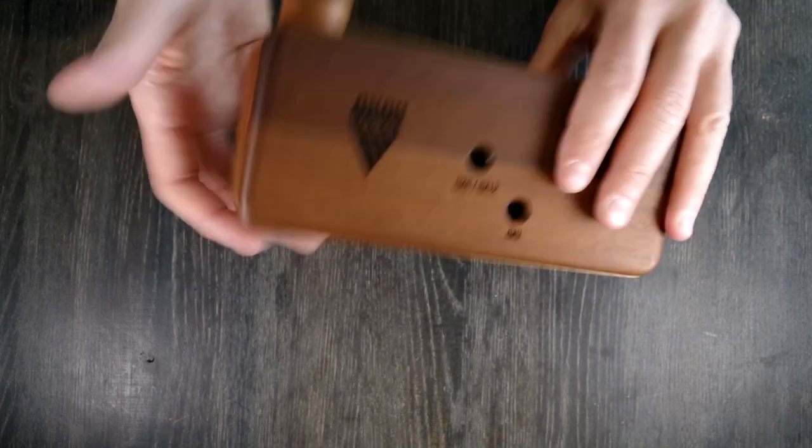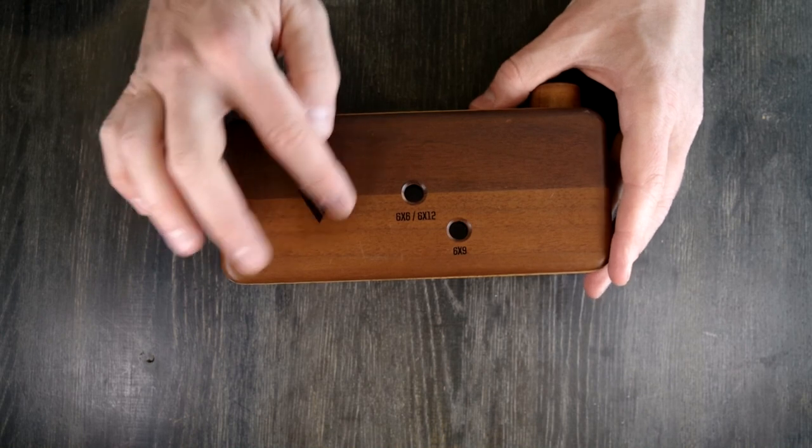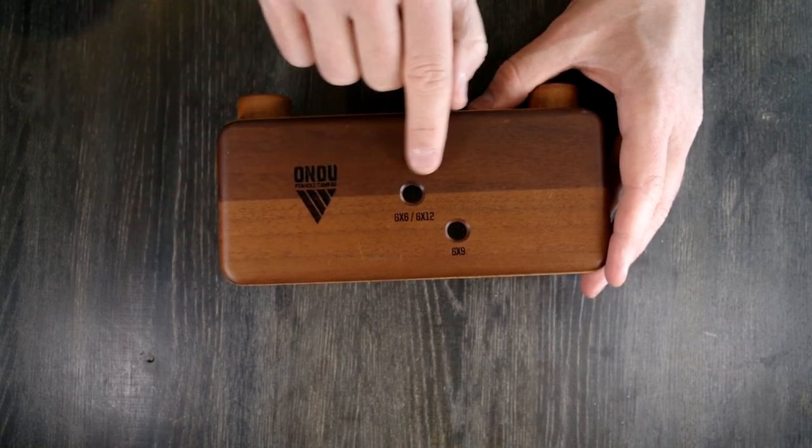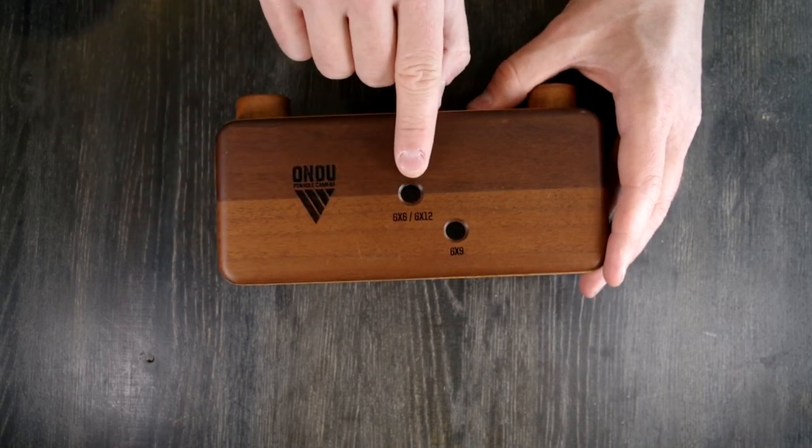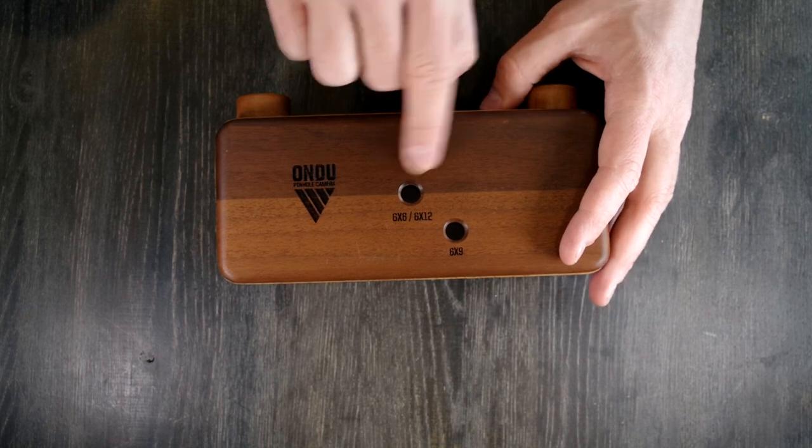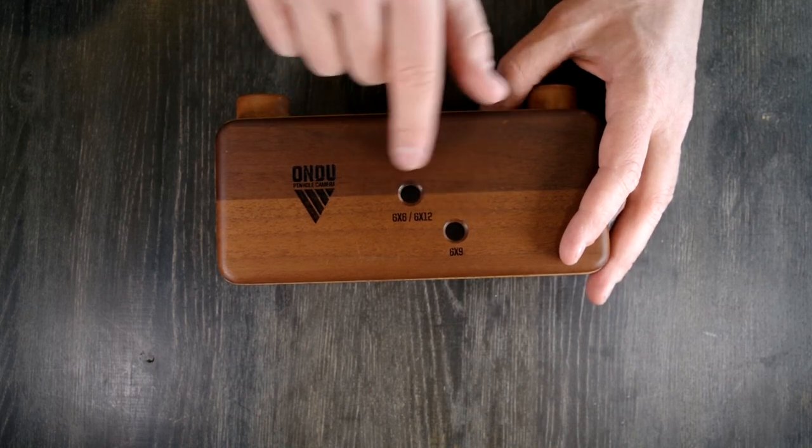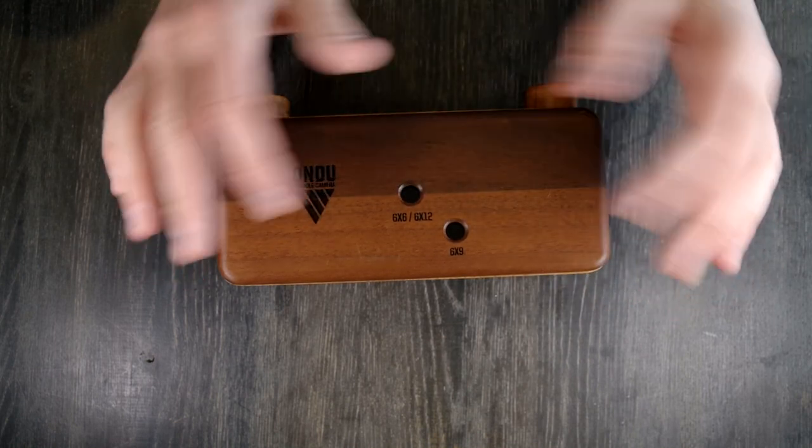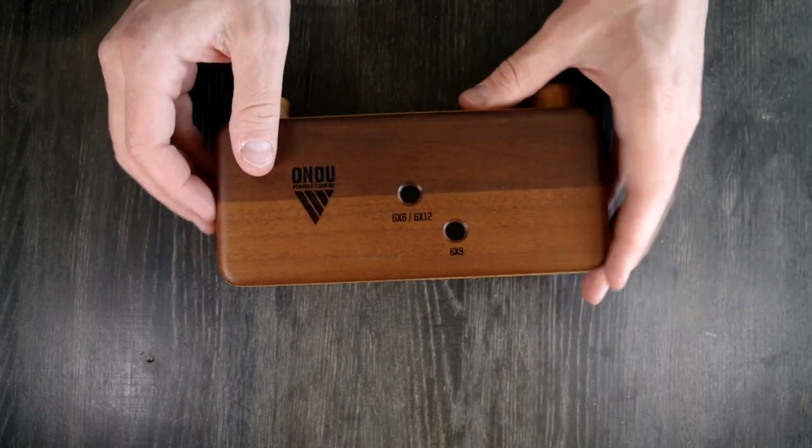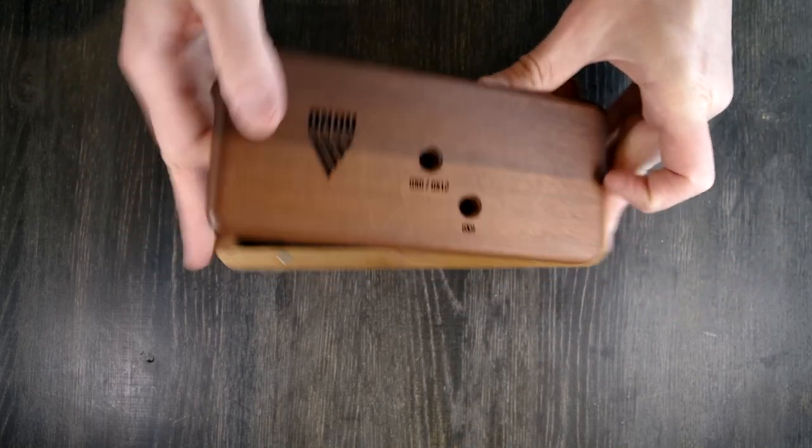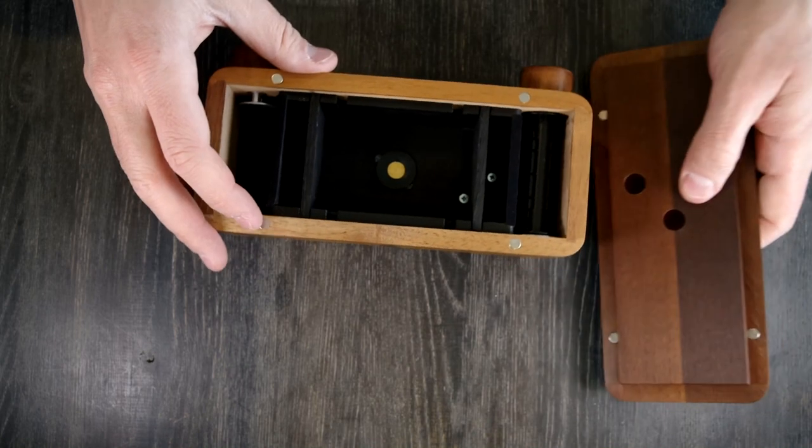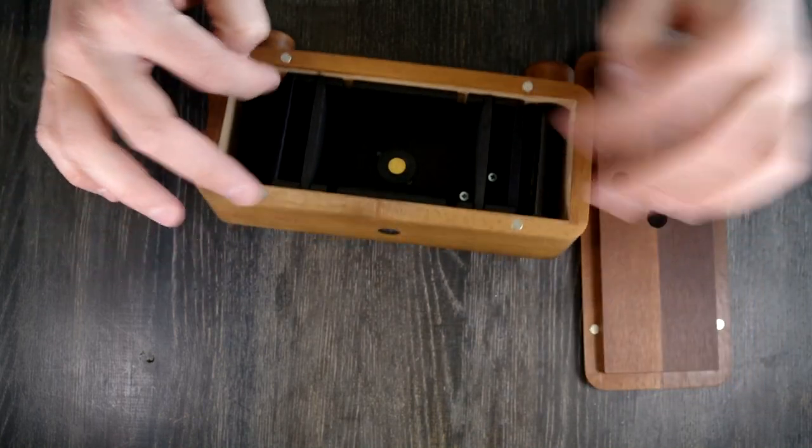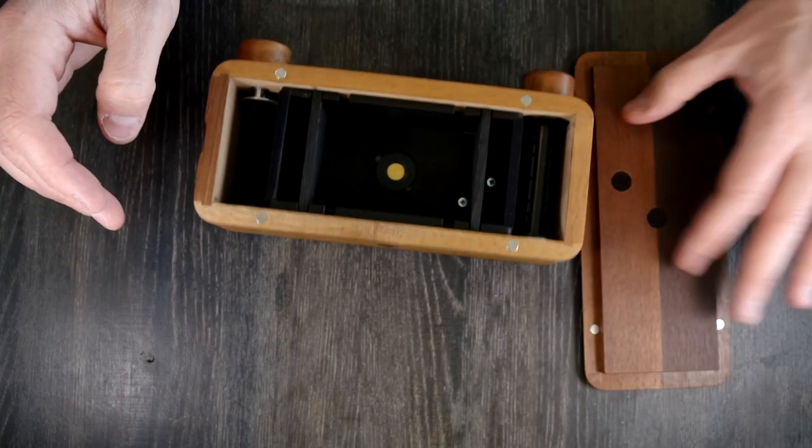On the back of the camera, we have the logo, company name, the 6x6 and 6x12 red window, and then the 6x9 red window. Later in the video, when I show you how to load film, I'll show you how to use those windows. Then we have four very strong magnets here that hold the film back in place.